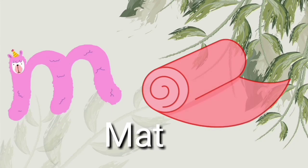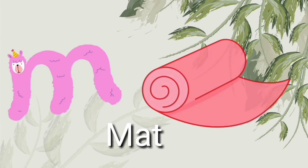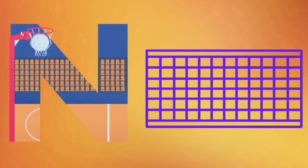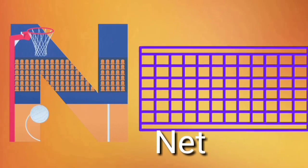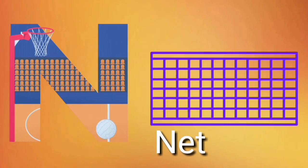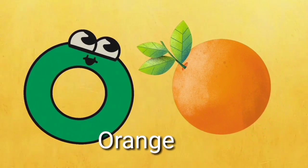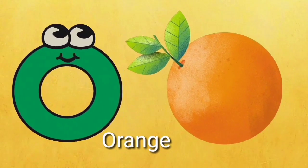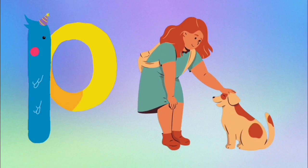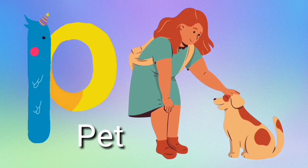M is for mat. M. Mat. N is for net. N. Net. O is for orange. O. Orange. P is for pet. P. Pet.